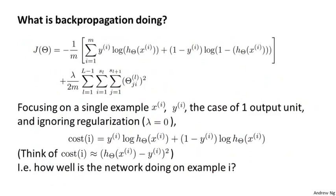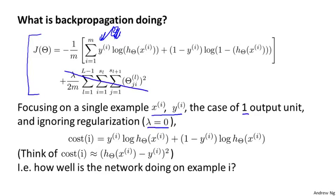To better understand what backpropagation is doing, let's look at the cost function. Here's the cost function for when we have only one output unit. If we have more than one output unit, we just have a summation over the output units indexed by k. We do forward propagation and backpropagation on one example at a time. Let's focus on a single example xi, yi, with one output unit so yi is just a real number, and ignore regularization so lambda equals zero.